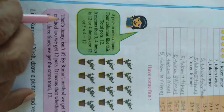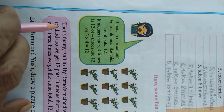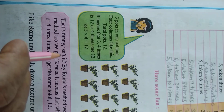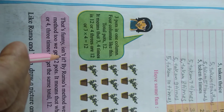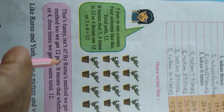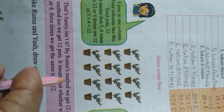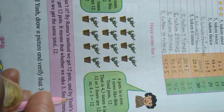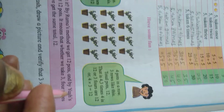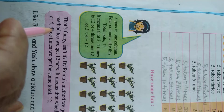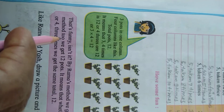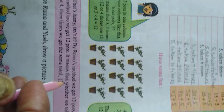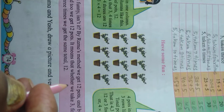That's funny, isn't it. By Rama's method we get 12 parts. And by Rama's method we also get 12 parts.